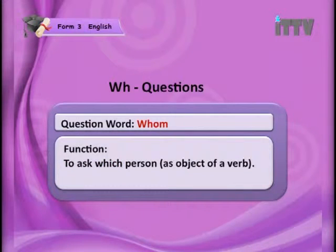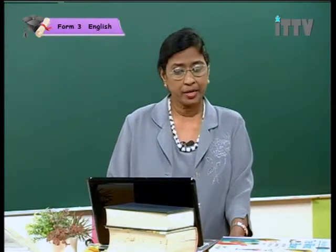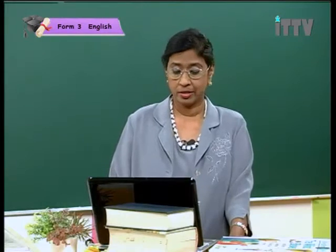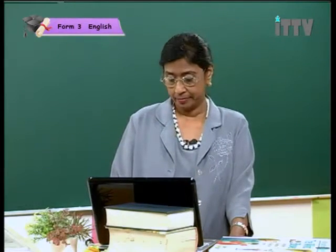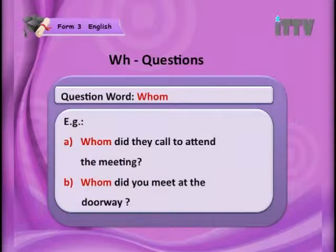The next question word is 'whom' — to ask which person as the object of a verb. Earlier we used 'who' as a subject; here we are using 'whom' as an object. For example: 'Whom did they call to attend the meeting?' and 'Whom did you meet at the doorway?'